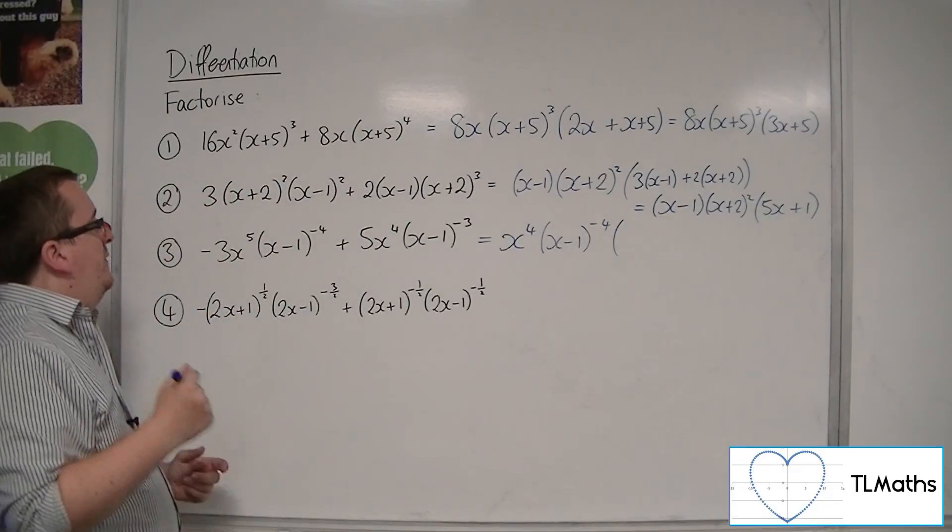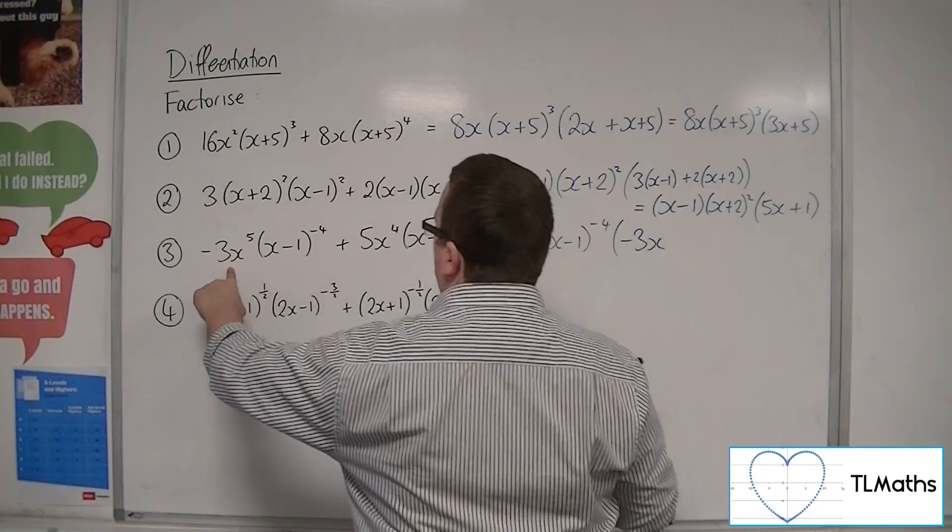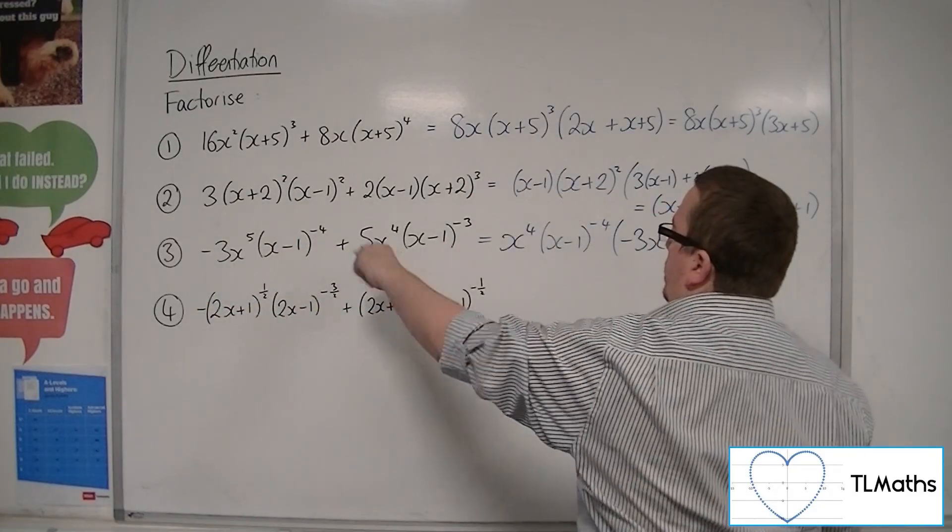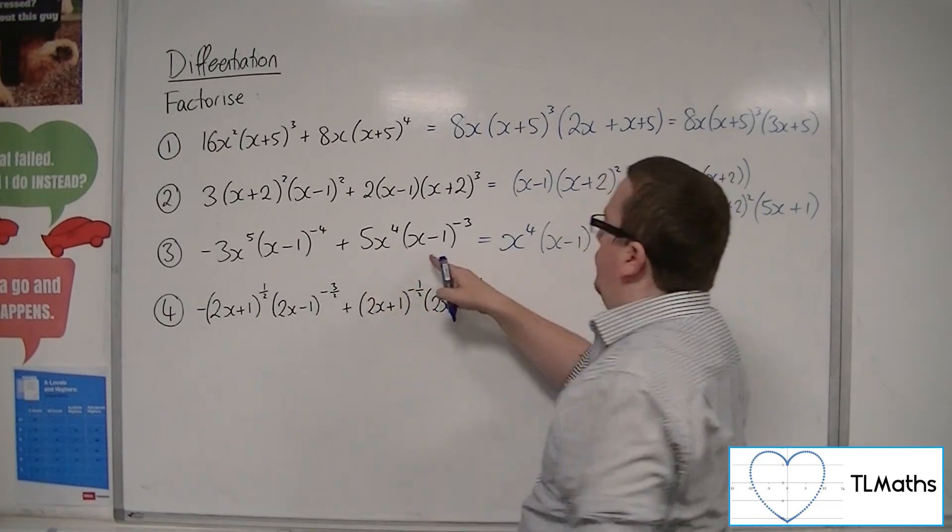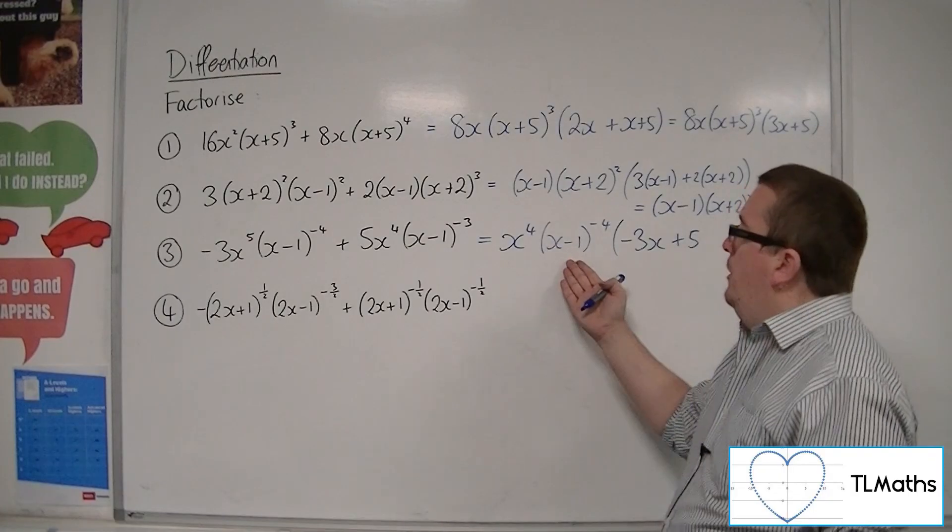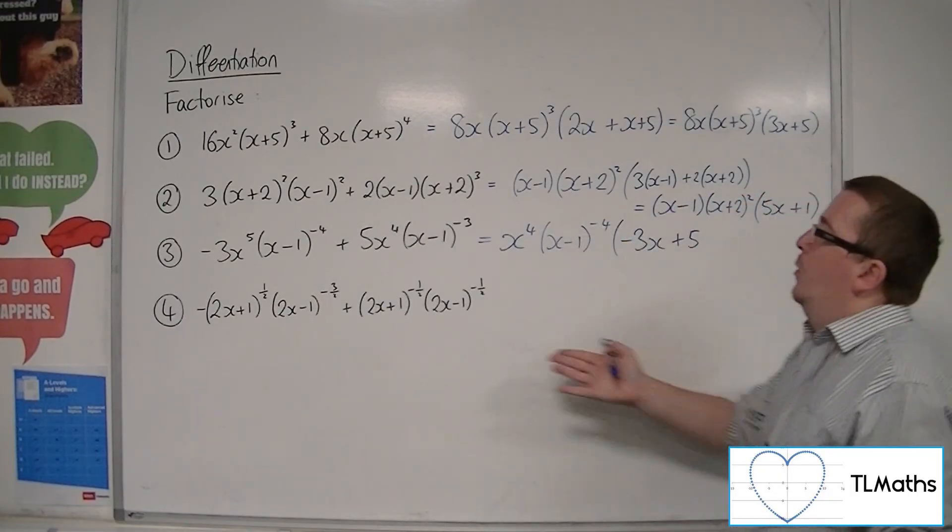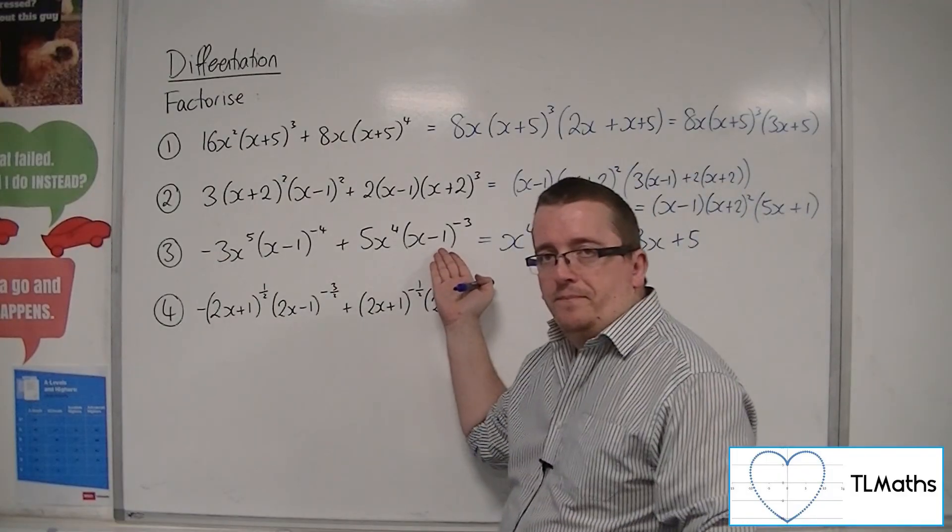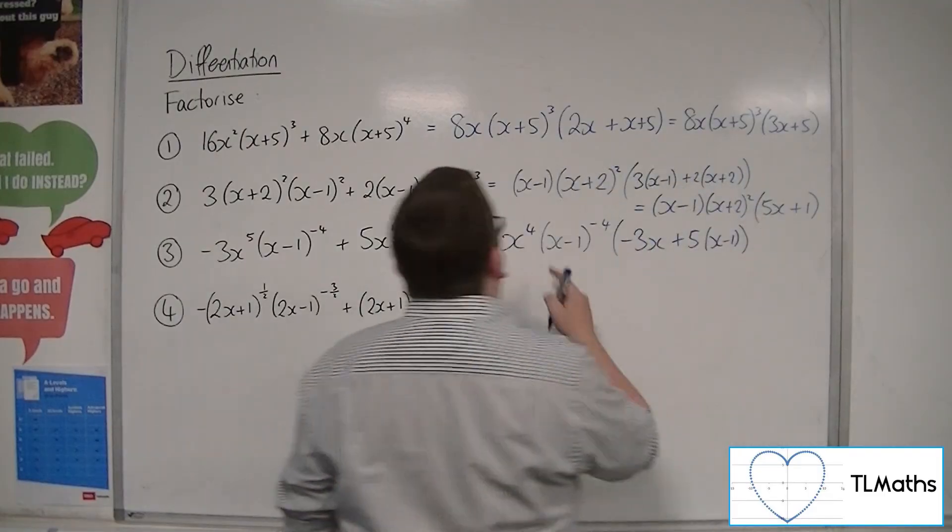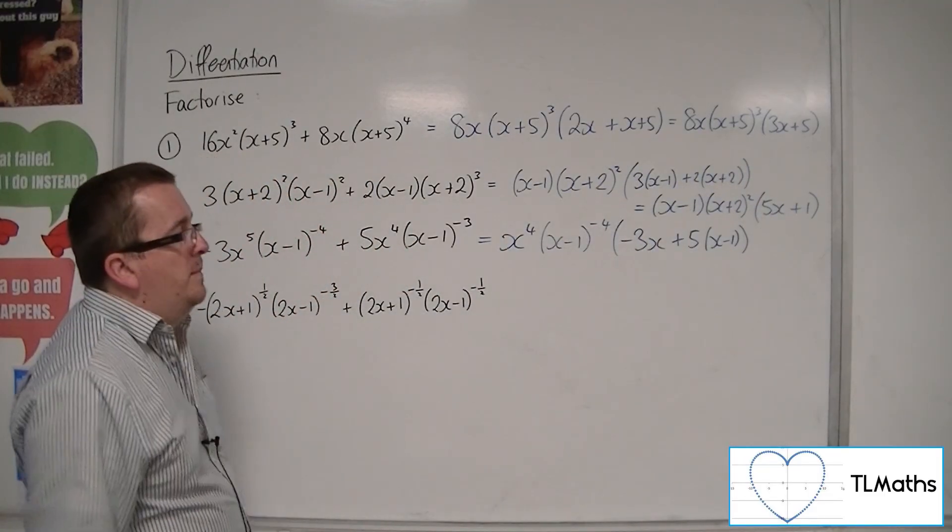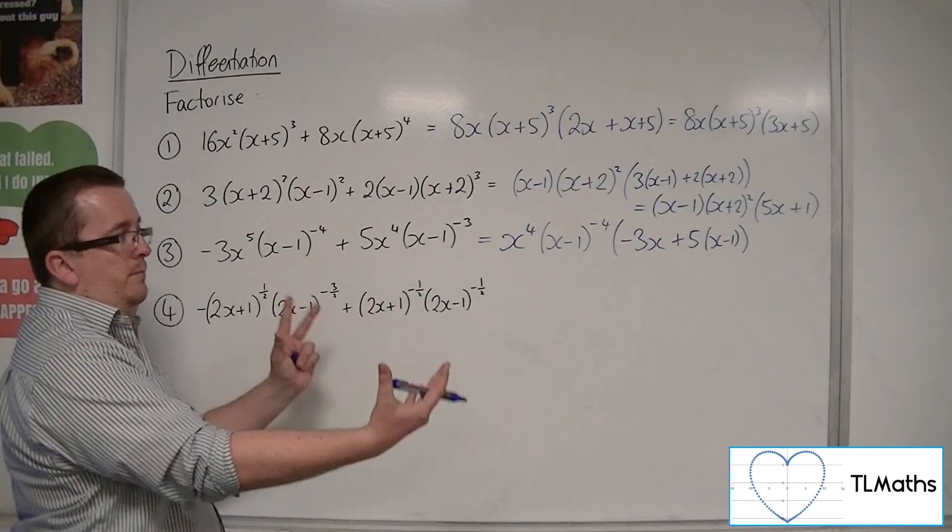Now what do we have left? Well I've got the -3x coming from that term there, and I've got the 5 coming from this term. Now what to do with this? Well, (x-1)^(-4) times something will make (x-1)^(-3), and that would be (x-1). So that's why we pulled out (x-1)^(-4), because that leaves us a nice singular bracket inside our factorized part.